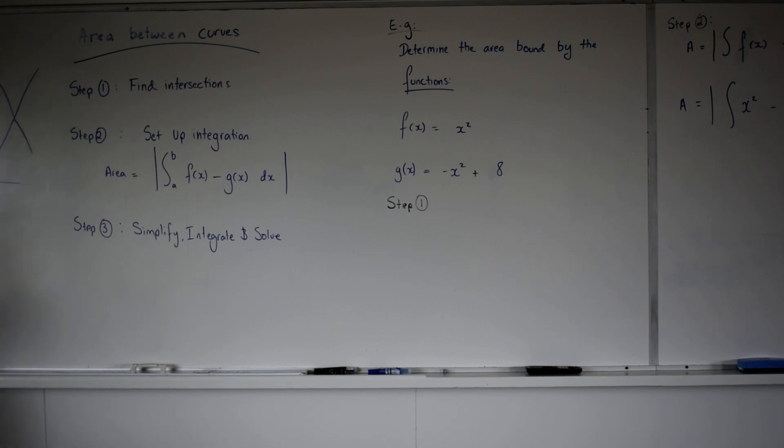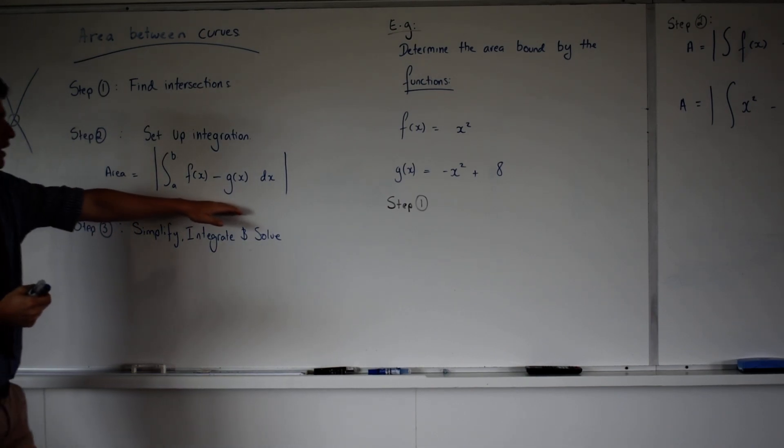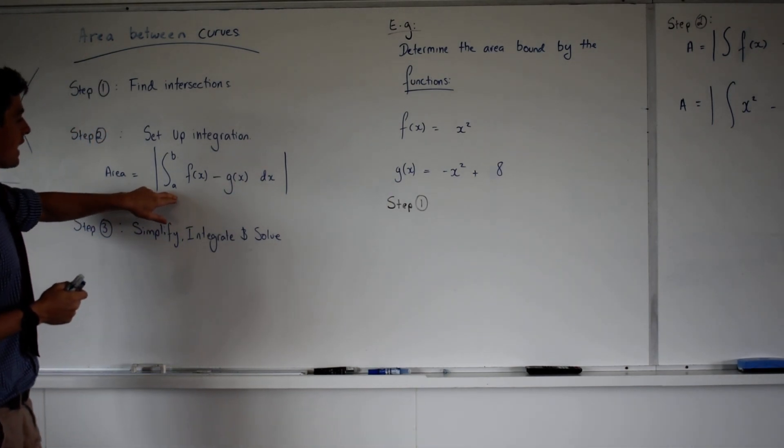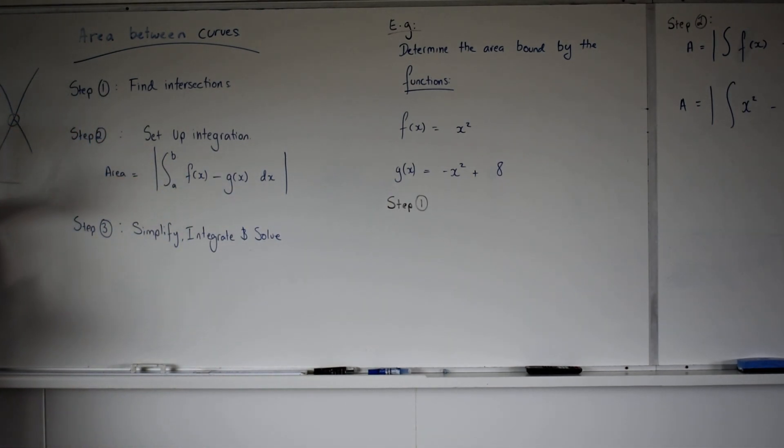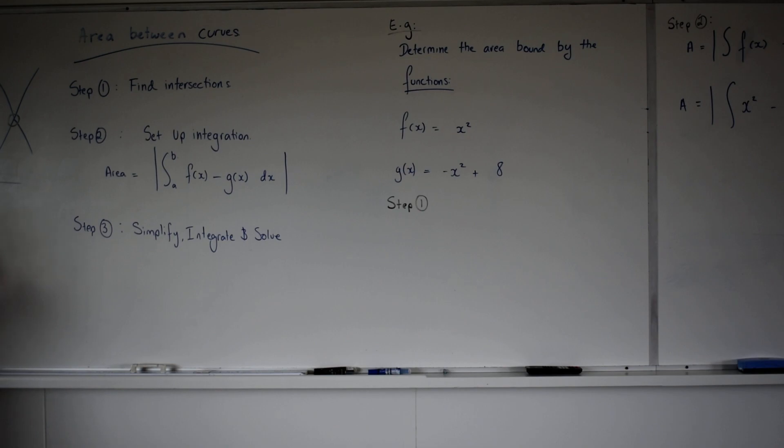Find the intersection points, which are these points here and here. Set up an integration where the bounds a and b are simply the x values of any intersection points. So we're just saying we want to determine this area here.